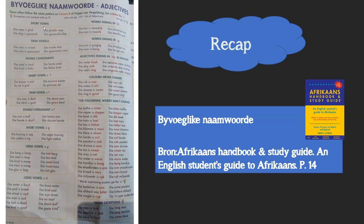You know by now what vowels and consonants are. So if I've got a word — look at that sentence, 'die seep is glat' — it's got a short vowel followed by a consonant. In order for that word to fit into the sentence properly, the consonant is going to double and I'm going to add an e. So 'die seep is glat' becomes 'die glat seep' — actually 'die gladde seep'. You see there, the consonant doubled.